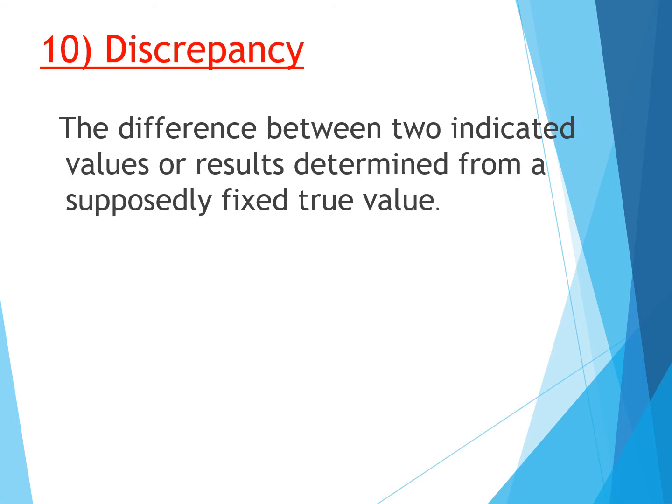Then discrepancy — the difference between two indicated values or results determined from a supposedly fixed true value. If for a given true value I obtain two different indicated values, the difference between those two indicated values gives discrepancy.